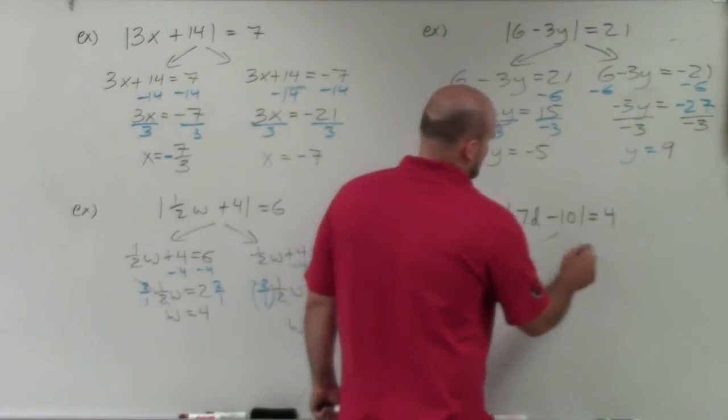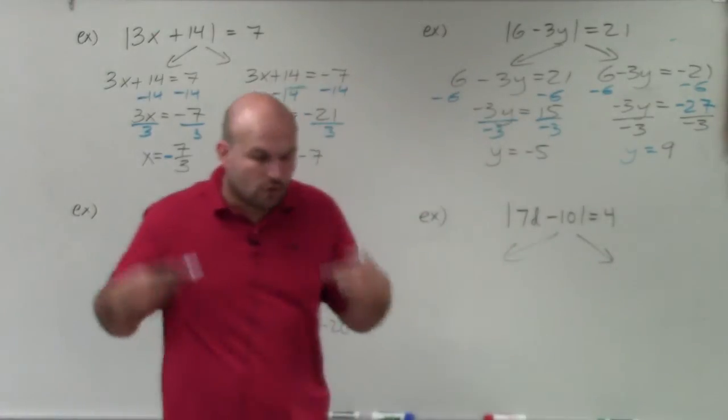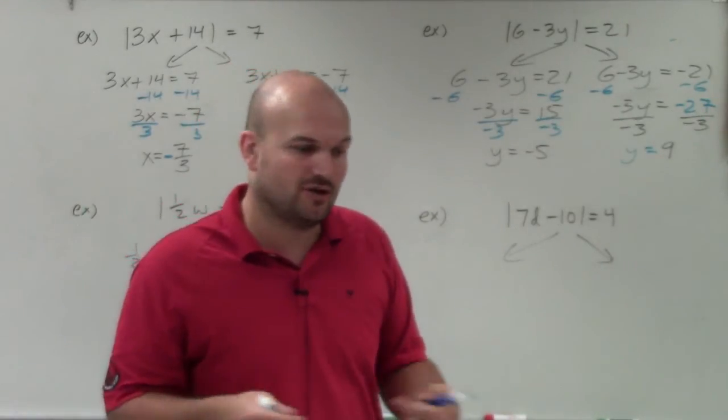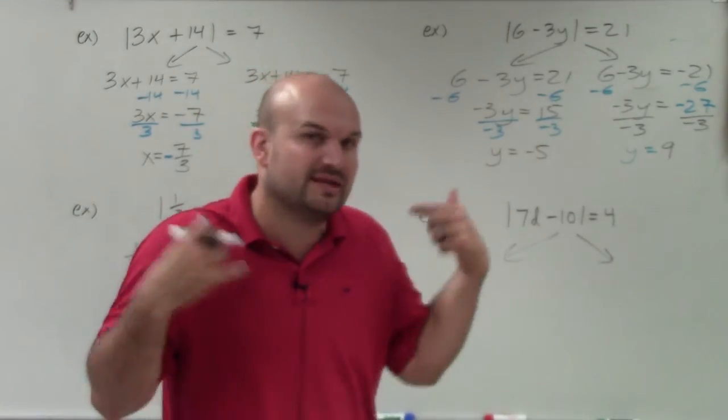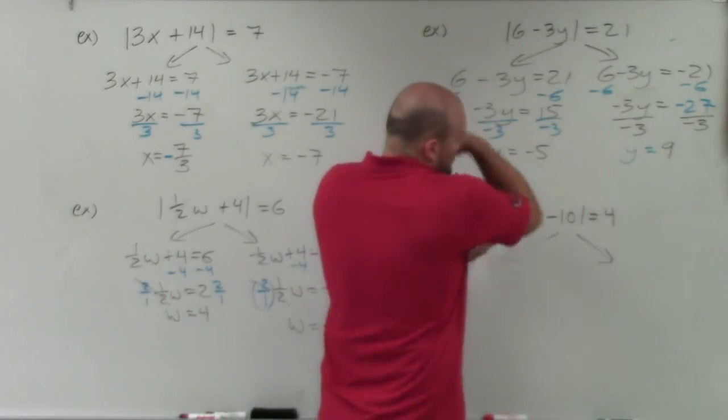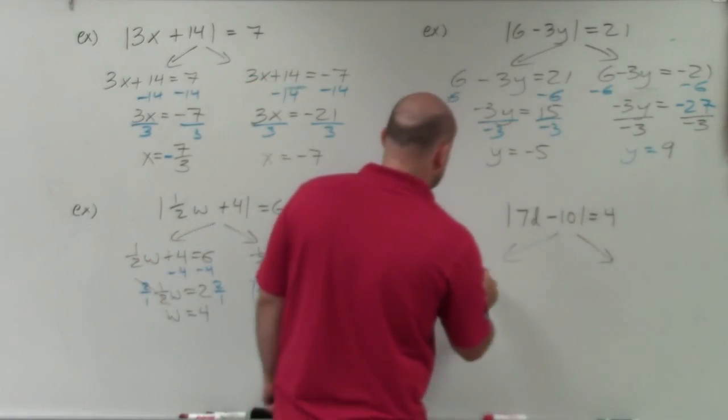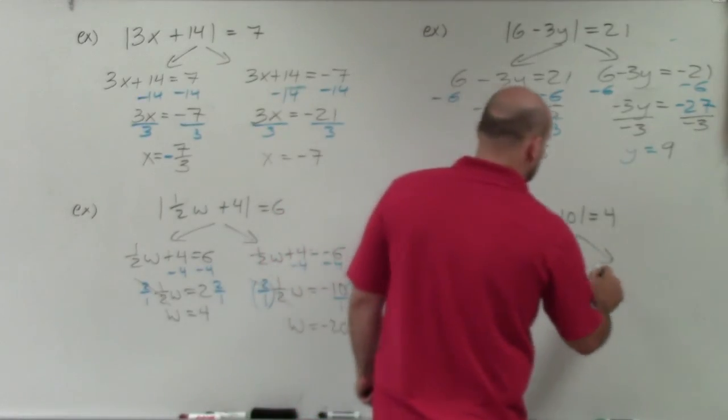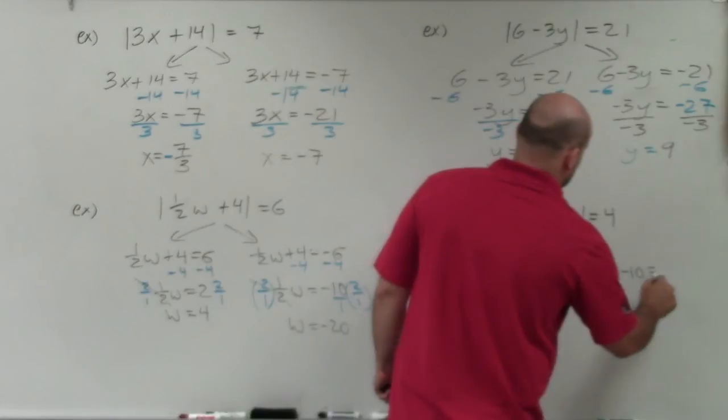Last example here. Again, you can see I'm doing this over and over again. We're going to get into some problems that are more difficult, but the process is remembering how do you get rid of your absolute value. Make sure your absolute value is isolated, which all these problems are. Then set up your two cases. 7d minus 10 equals 4, and 7d minus 10 equals negative 4.